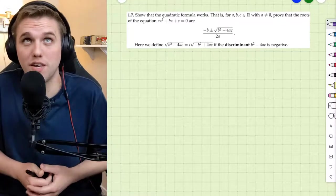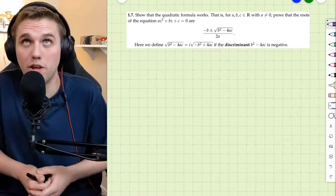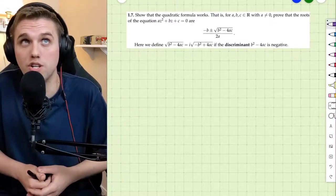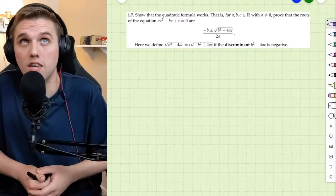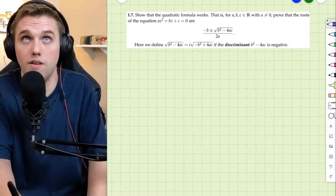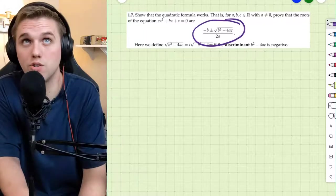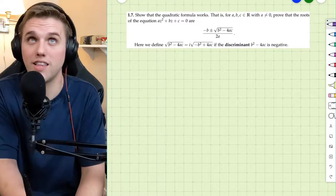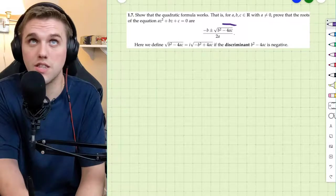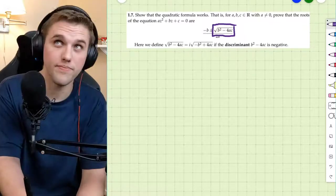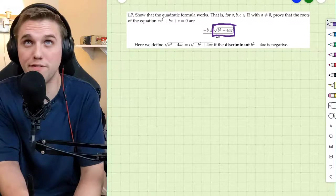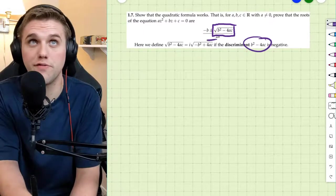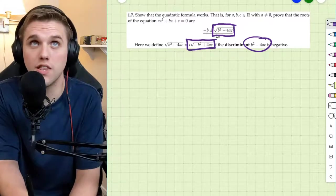So let's be more specific. For a, b, and c that are real numbers, with a being non-zero, prove that the roots of the equation az² plus bz plus c equals 0 are given by the quadratic formula. This right here has a special definition for when b² minus 4ac is negative.